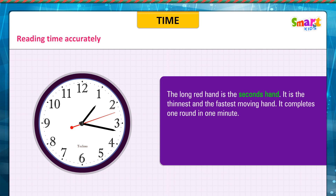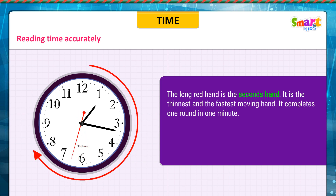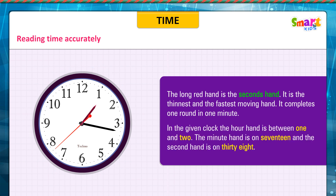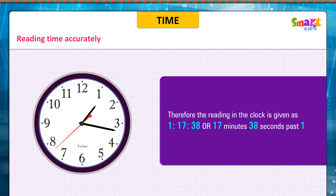The long red hand is the seconds hand. It is the thinnest and the fastest moving hand. It completes one round in one minute. In the given clock, the hour hand is between 1 and 2, the minute hand is on 17, and the second hand is on 38. Therefore, the reading in the clock is given as 1 hour 17 minutes 38 seconds, or 17 minutes 38 seconds past 1.